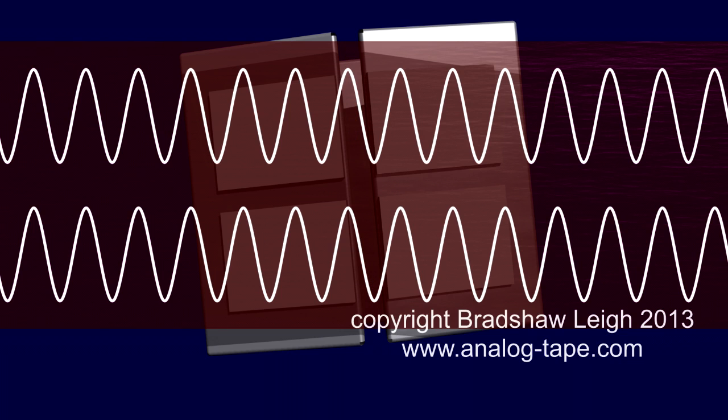So if your azimuth is out of adjustment, the phase shift can cause problems with your stereo image and your machine will have an erratic frequency response.